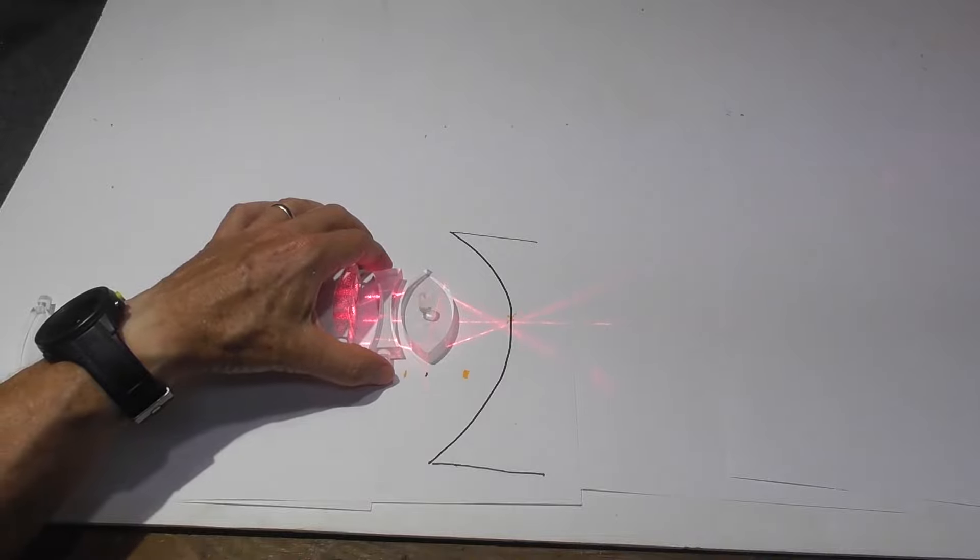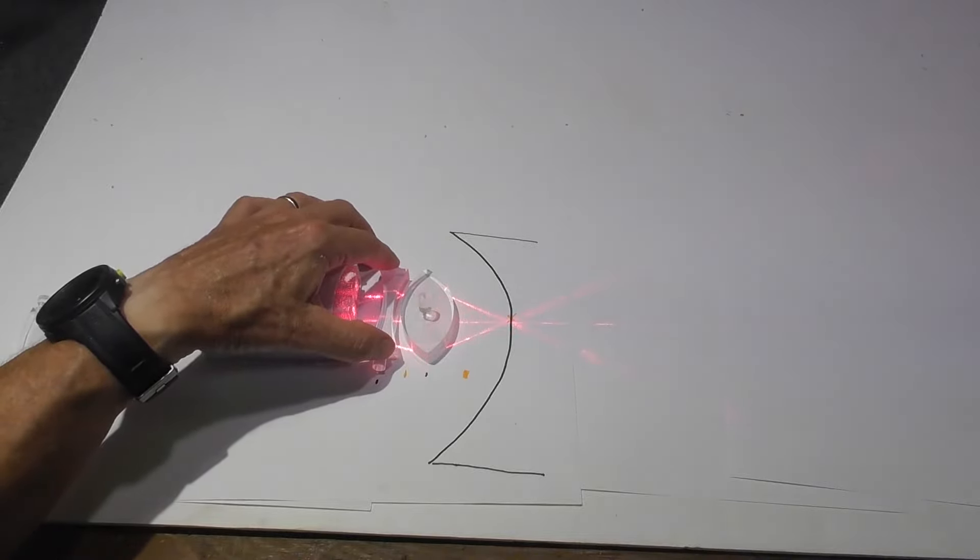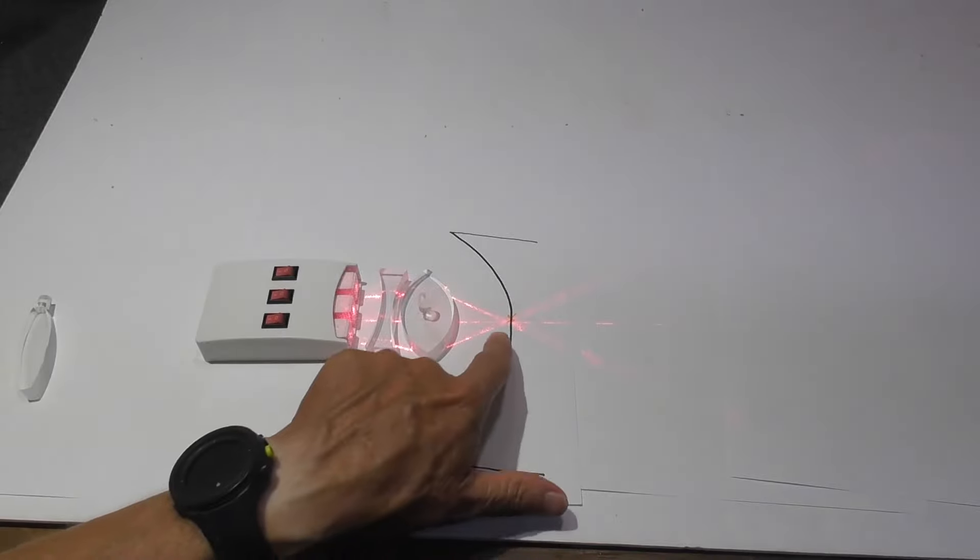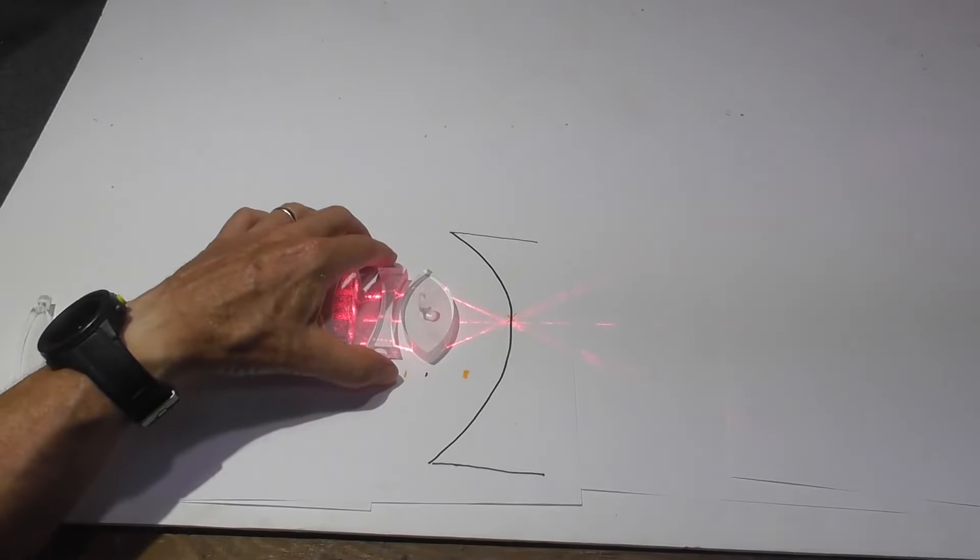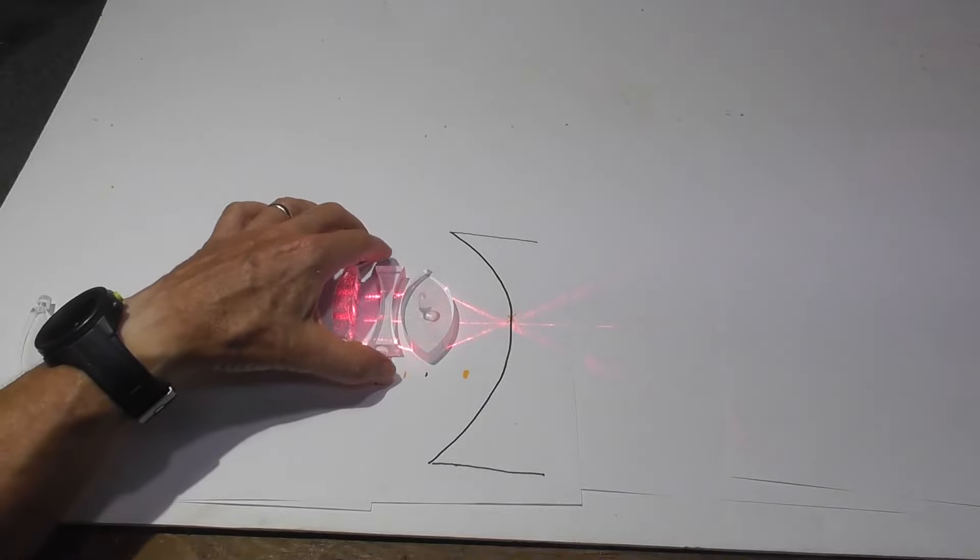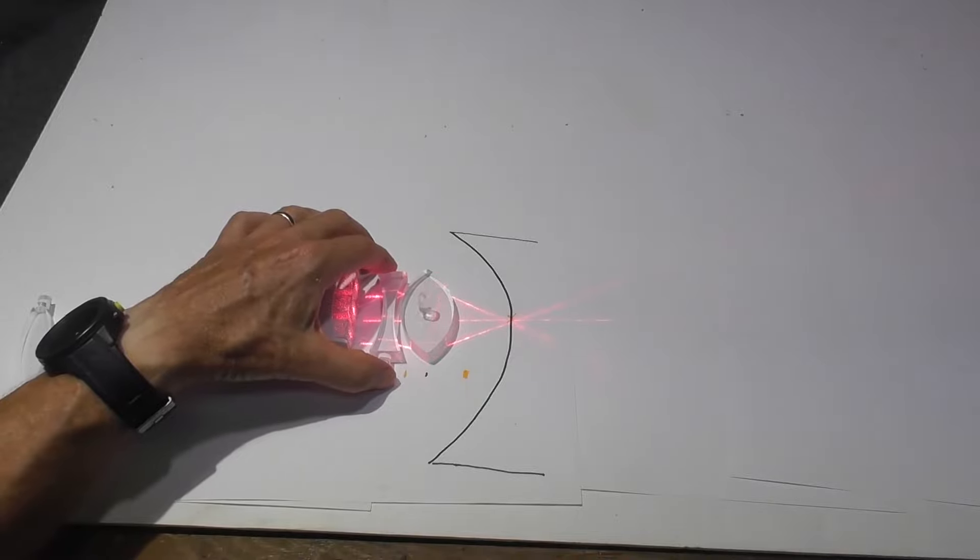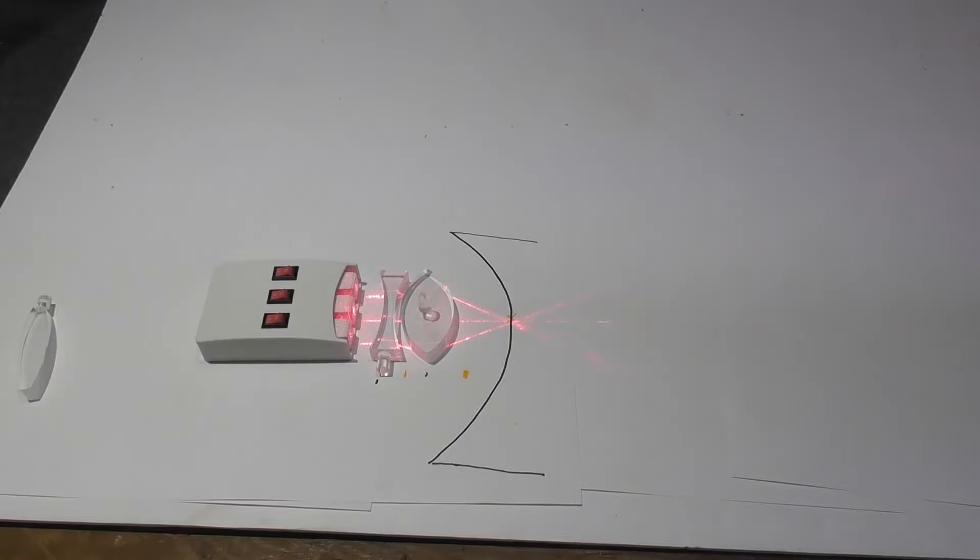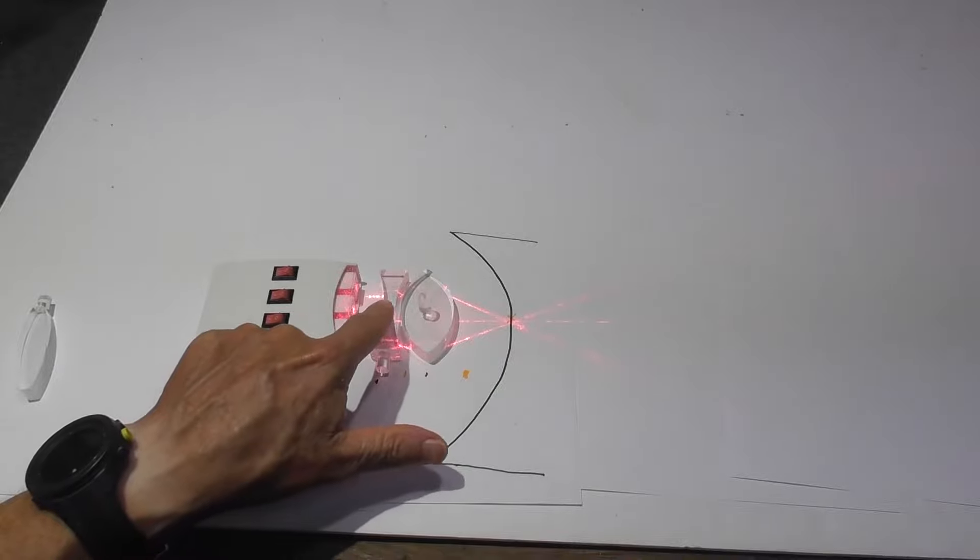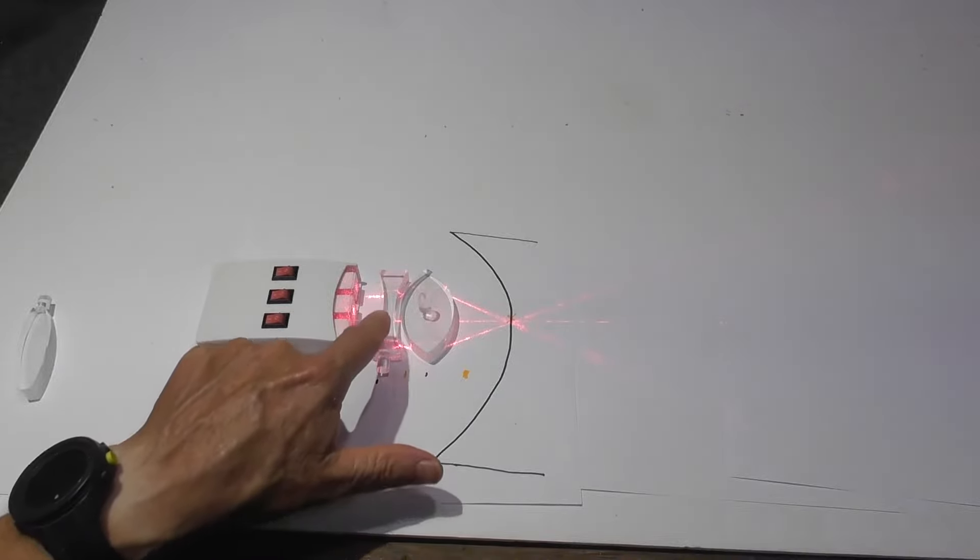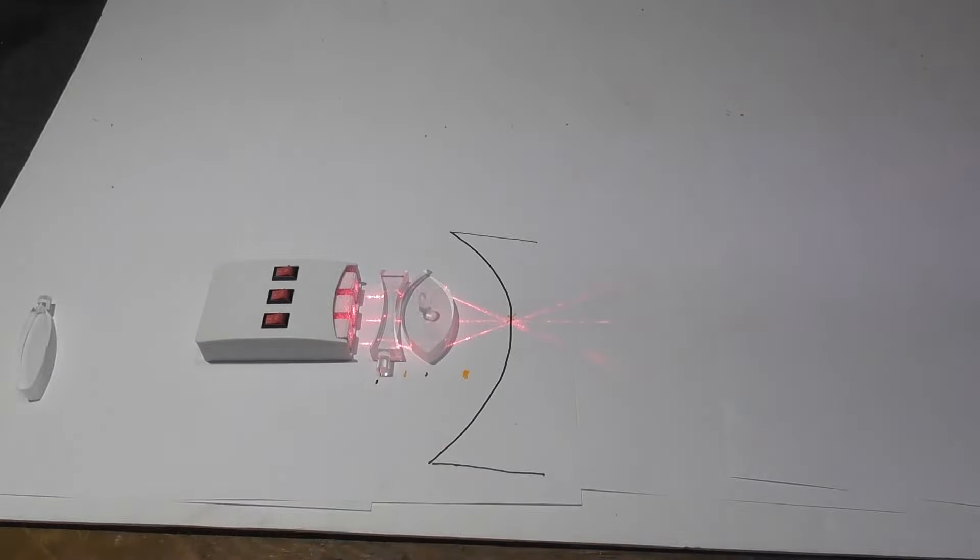Now when you focus it, let me put it on the correct spot. You will notice that now the light is focused right on the retina. So here it is without the lens and then here it is focused with the lens. The concave lens corrects the nearsightedness.